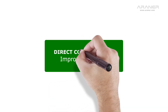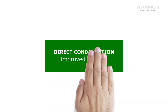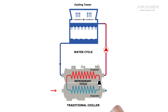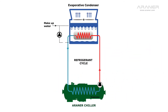But why not use a more efficient process? Aronaire's chillers for direct condensation reduce this process into a single stage, eliminating the cooling water loop and reducing energy consumption. The heat of the condensation process goes directly into the atmosphere.